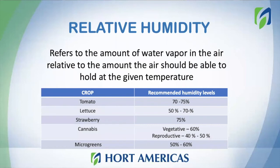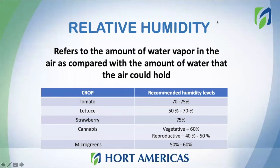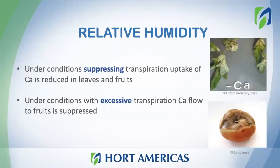Relative humidity refers to the amount of water vapor in the air compared with the maximum amount the air could hold. Here is a table showing the most common crops grown inside greenhouses and the recommended levels of humidity. Plants love humidity, but it's very important to always maintain the recommended levels. Very high humidity levels can cause problems with fungi, and very low humidity levels can cause problems with the stomata. Relative humidity is also very related to transpiration.